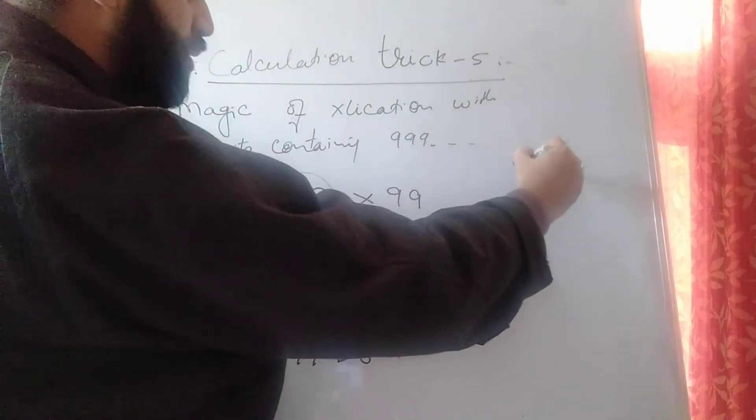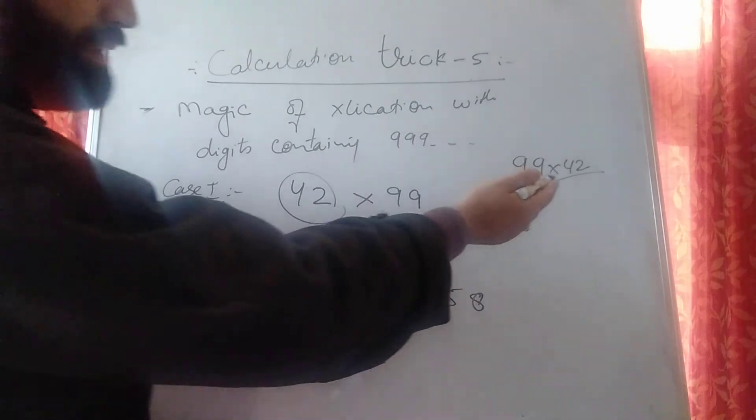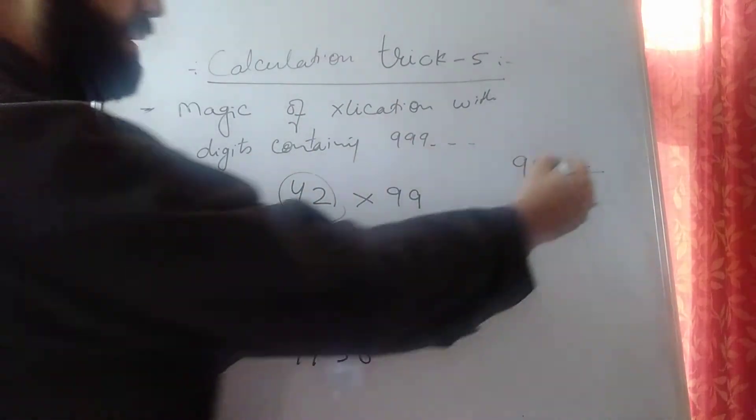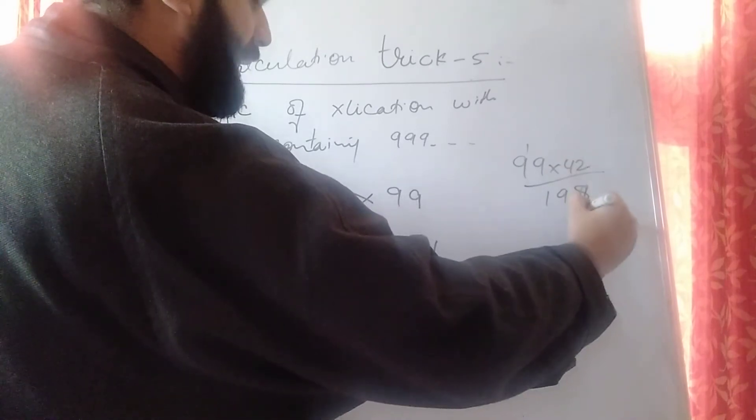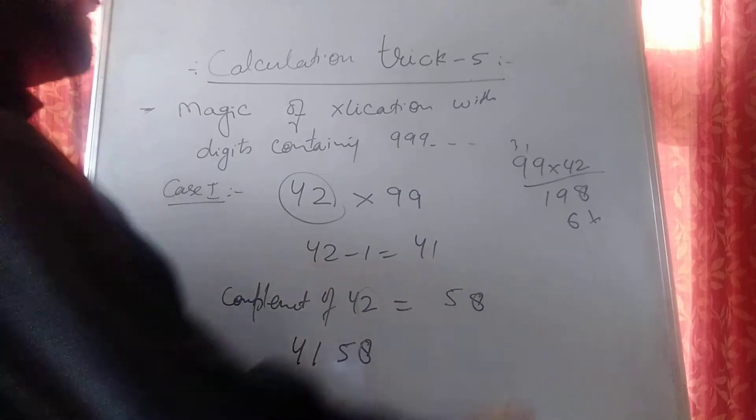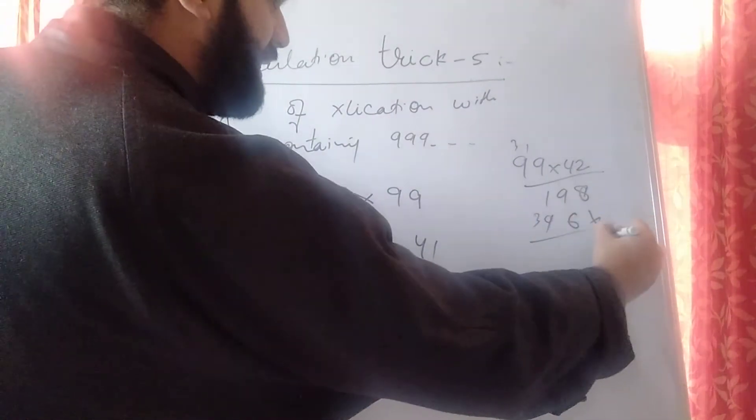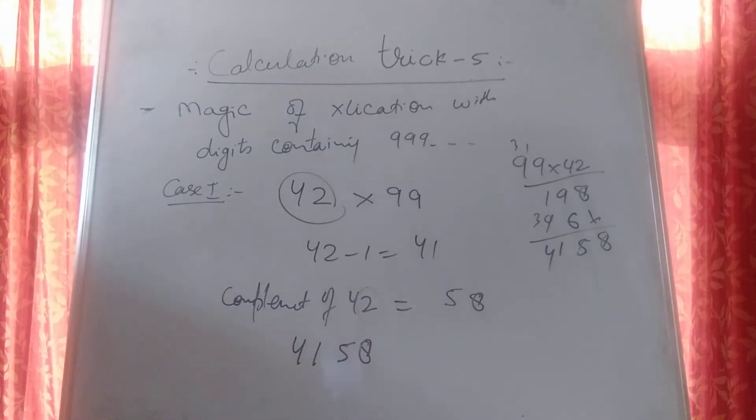If you check your answer, you can go 99 into 42. If you calculate by the traditional multiplication: 2×9 is 18, it's 19, 4×9 is 36. 4, 9, 5, 6, 39. It's 8, it's 15, it's 1, it's 4. So this is the magic.